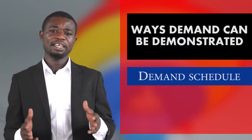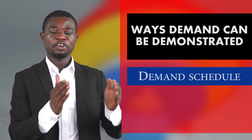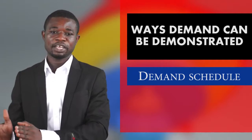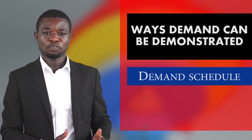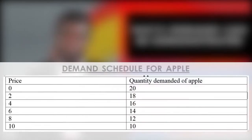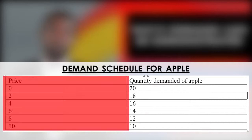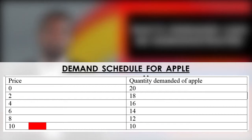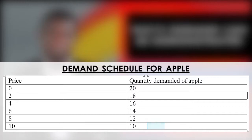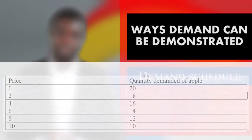With the demand schedule, it is the tabular arrangement of the various prices with their corresponding quantities that a consumer is willing and able to purchase. From the demand schedule displayed on your screen, you will see the price column and the quantity column, where the price column begins from zero and increases in multiples of two, with corresponding quantities for the commodity — which is an apple.